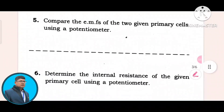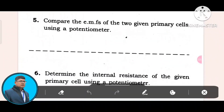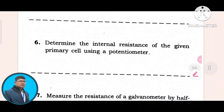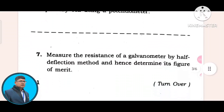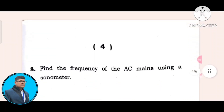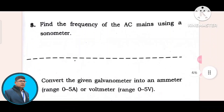Question number 5: compare the EMFs of two given primary cells using a potentiometer. Question number 4: determine the internal resistance of the given primary cell using the potentiometer. Question number 7: measure the resistance of a galvanometer by the half-deflection method and hence determine its figure of merit. Question number 8: find the frequency of AC mains using a sonometer.